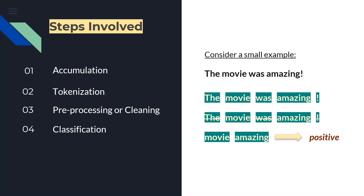These are the steps involved. The first step is accumulation — this is the base step before the next three steps, where the data is collected for training and testing. The next process involves tokenization, preprocessing, cleaning, and classification. Let's consider a very small example: 'The movie was amazing.' You can immediately make out that this is a positive tweet. The very first step is tokenization — splitting a sentence into a sequence of texts or a set of words known as tokens. Each word is a token here: 'The', 'movie', 'was', 'amazing'.